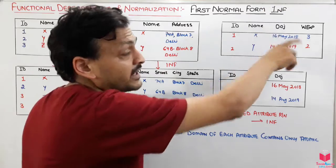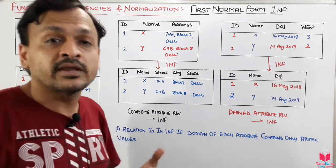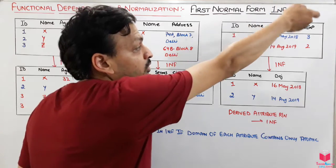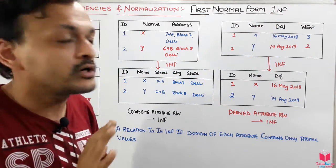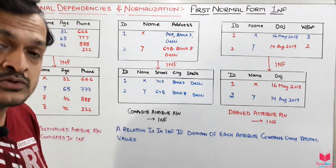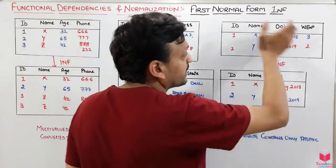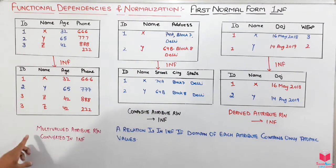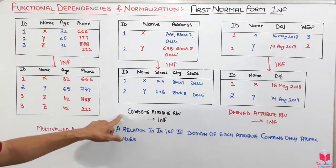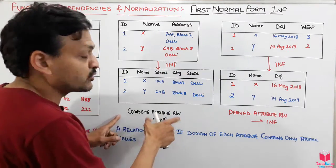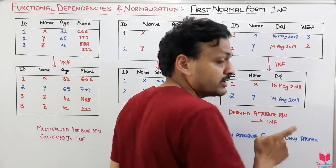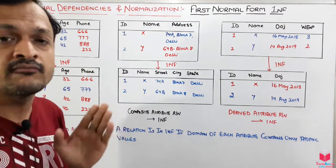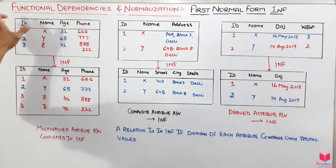Work experience is a derived attribute — it can be calculated, so we remove that column from the table. The column whose values can be derived from other data does not need to be stored. To summarize: in the first example we handled multi-valued attributes, in the second we handled composite attributes, and in the third we handled derived attributes — all converted into First Normal Form.